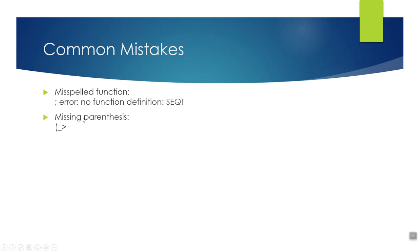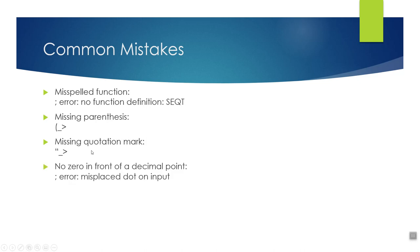If you forget to put parentheses, it's going to say you still have an open parenthesis that needs to be closed. Similarly, if you're missing a quotation mark, it tells you there's an open quotation mark you need to finish. And if you forget to put a zero in front of a decimal — like 0.25 — it'll give you an error called 'misplaced dot on input'.